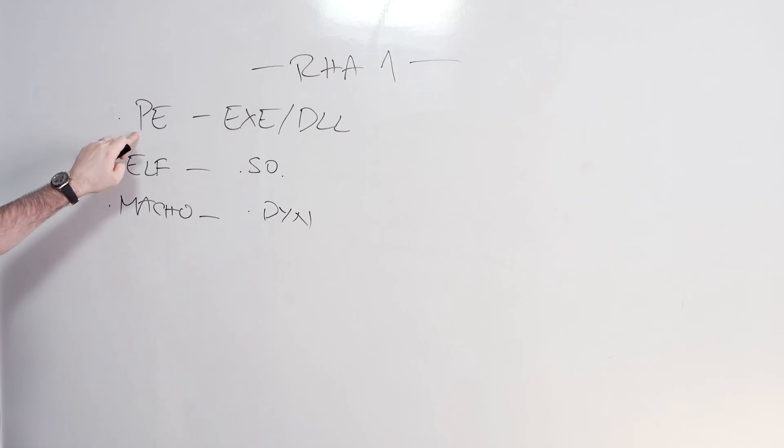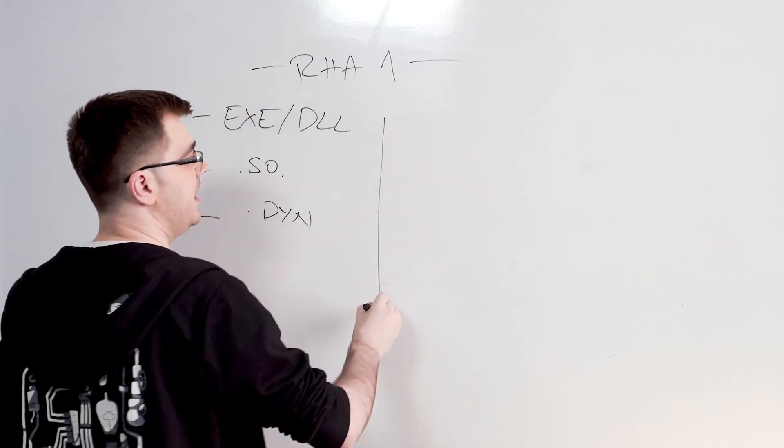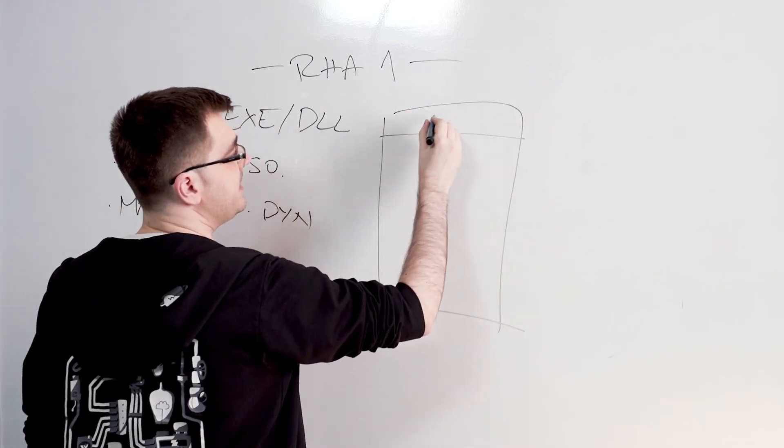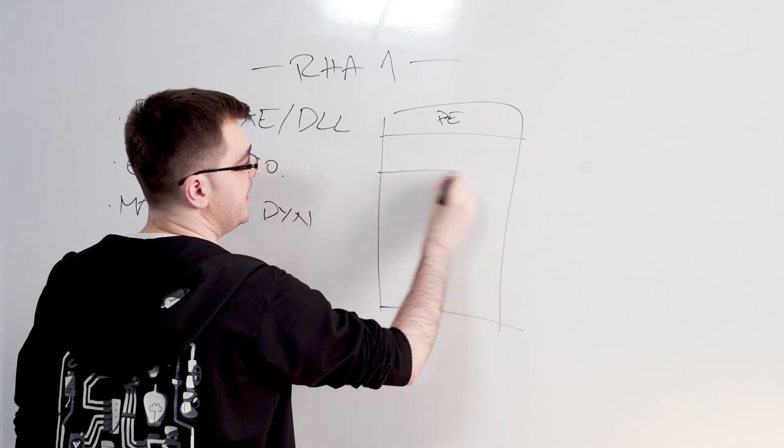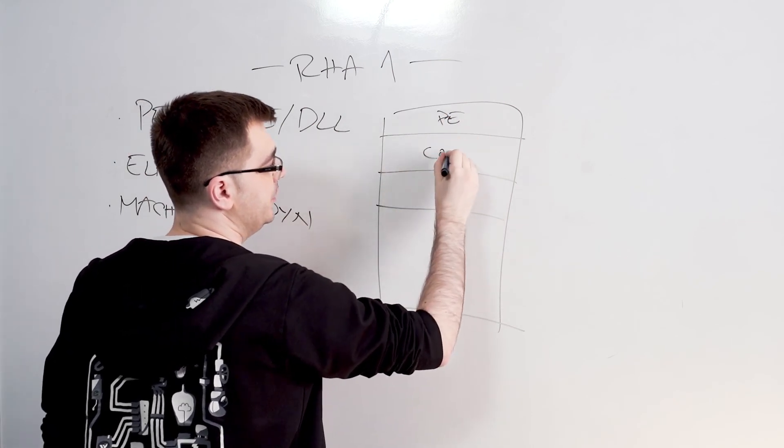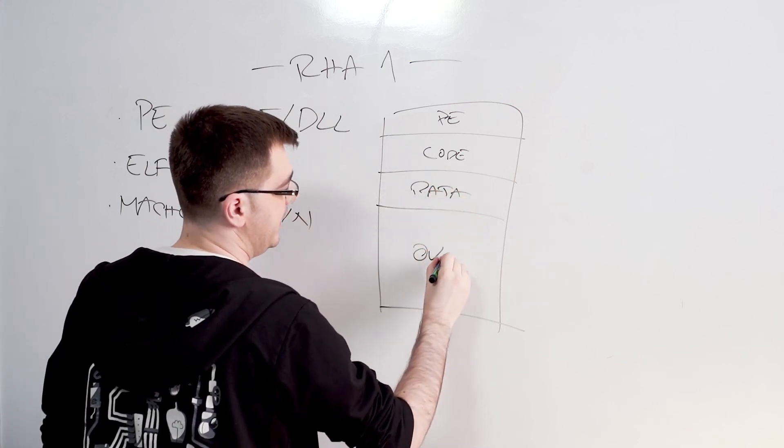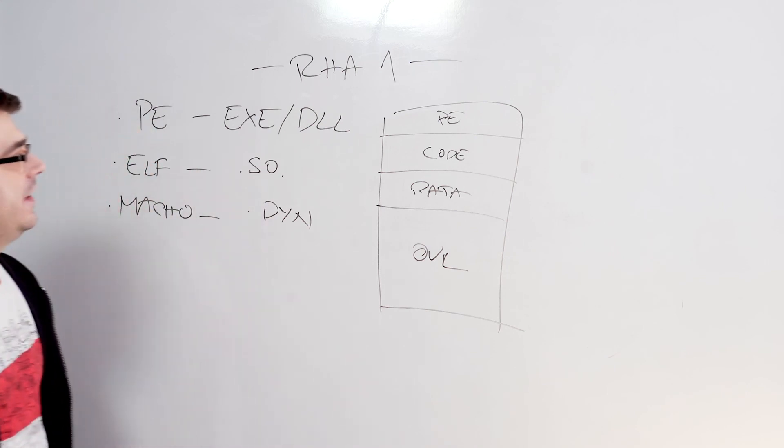If you talk about just the portable executable file as an example and we try to visualize it as a block which has the portable executable headers and then has sections which have code and have data and then there's probably like an overlay at the end of the file.